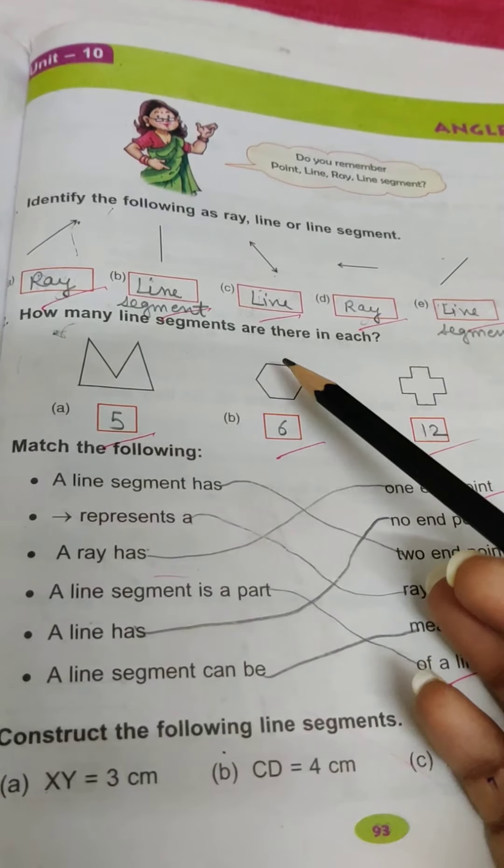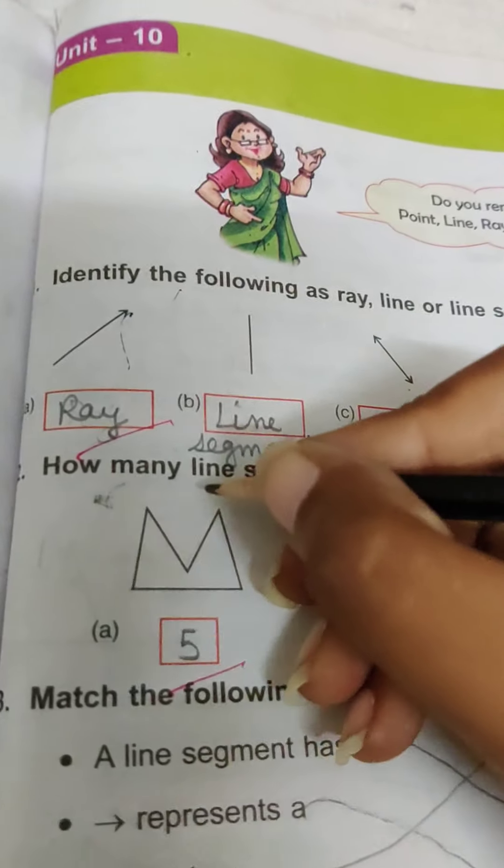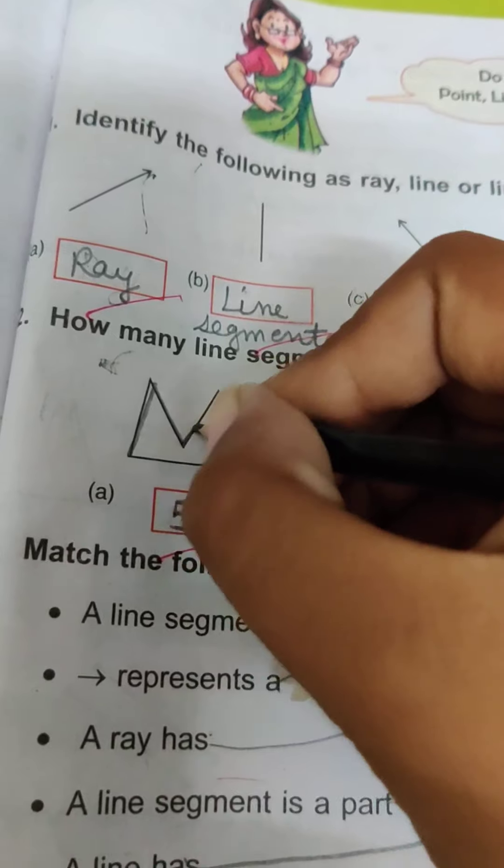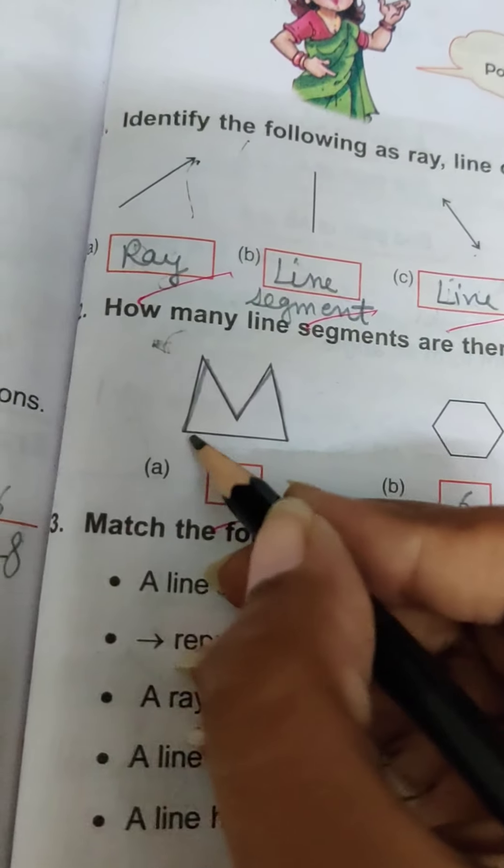Next is how many line segments are there? Count these in the figures. 1, 2, 3, 4, and 5.